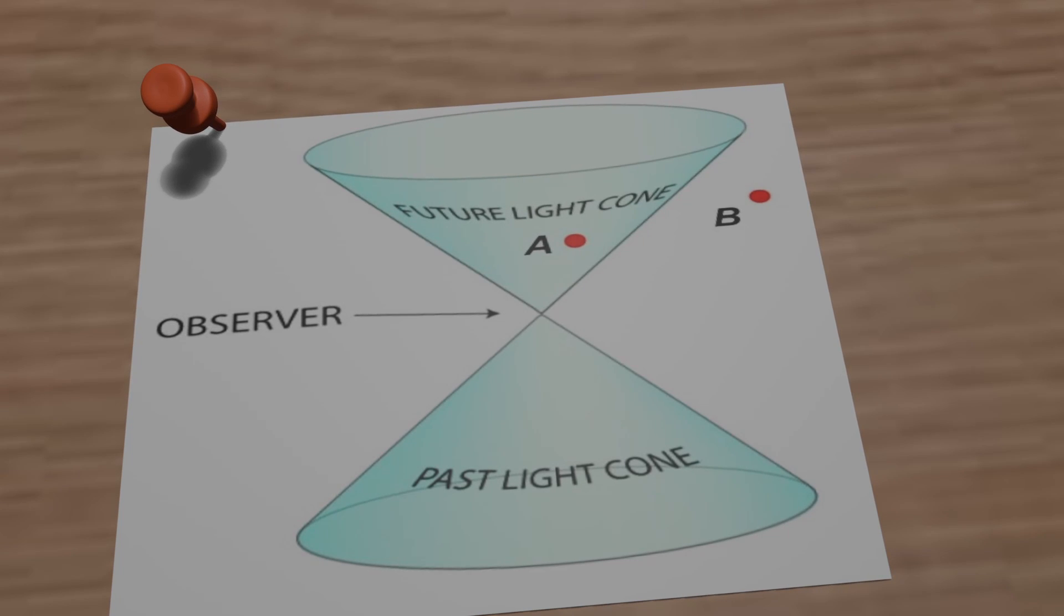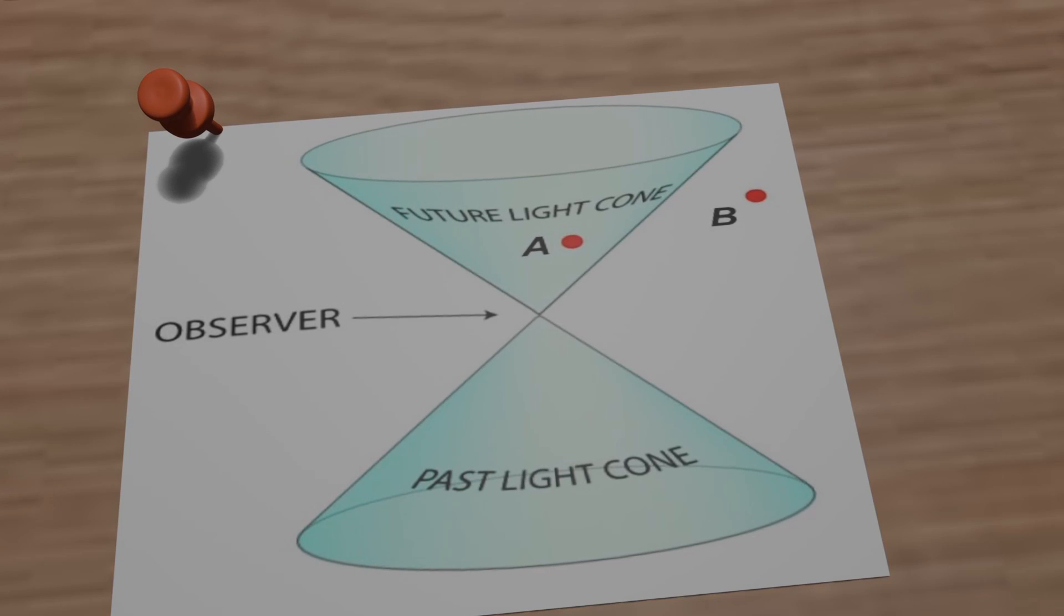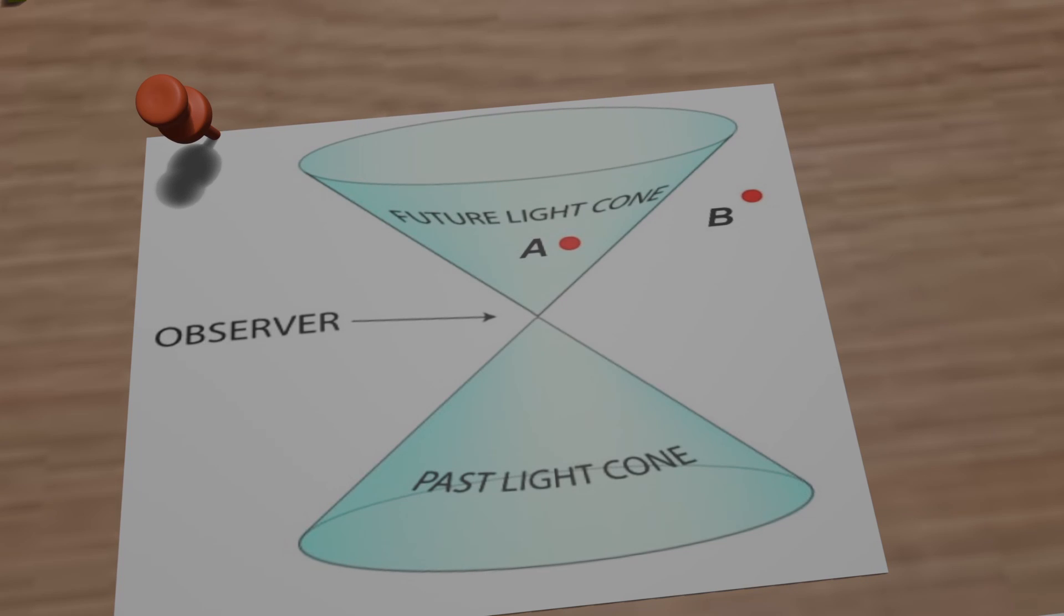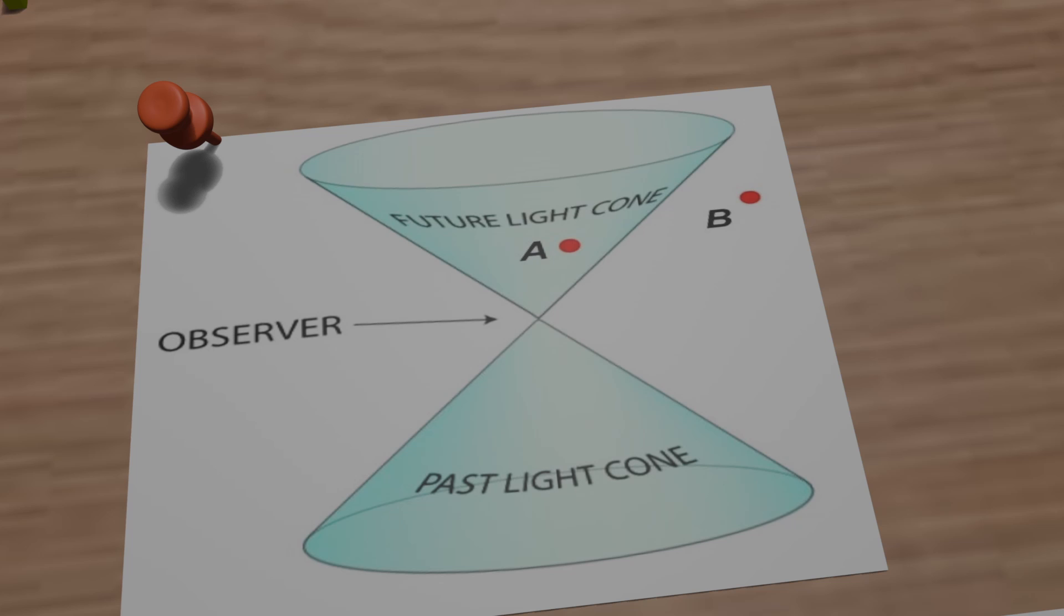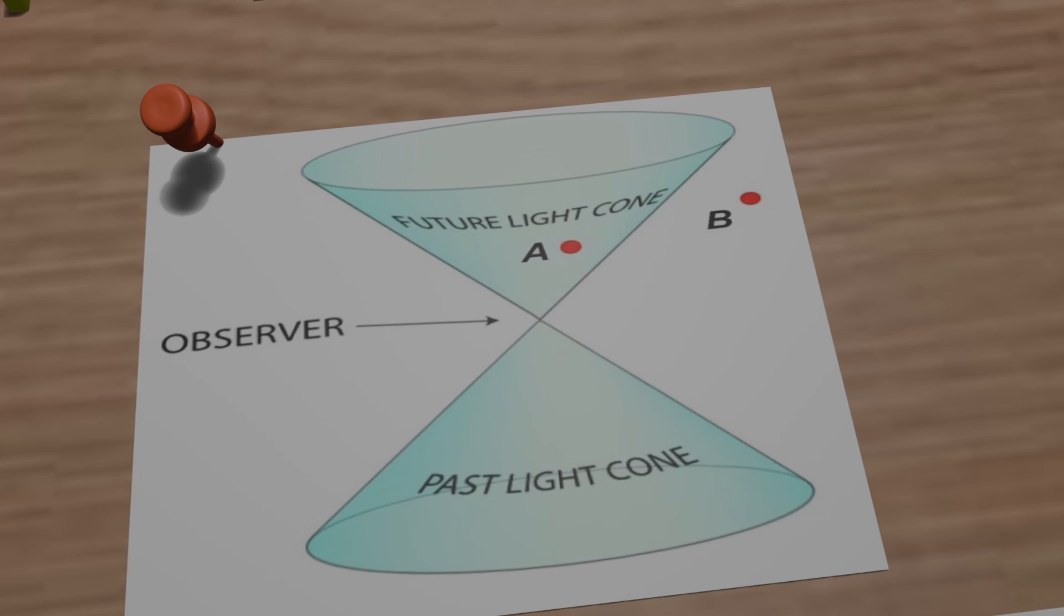In early experiments, the distance between the detectors wasn't always large enough, so there was a risk that information could travel between the two particles at faster than light speeds, undermining the non-local nature of the experiment.